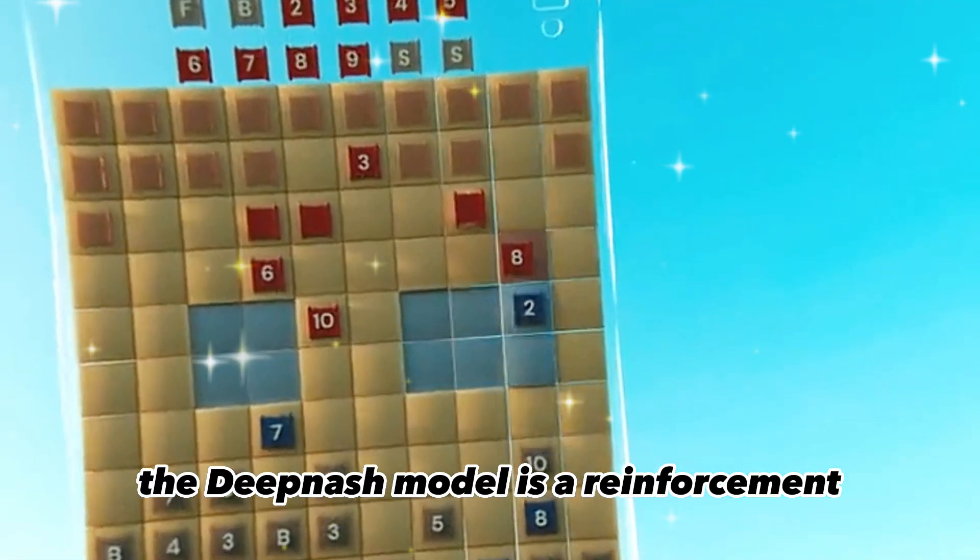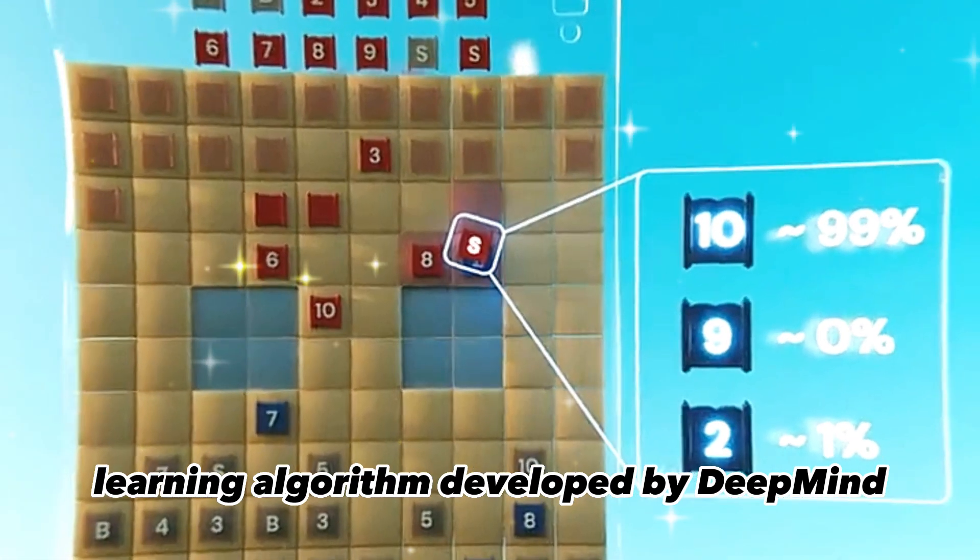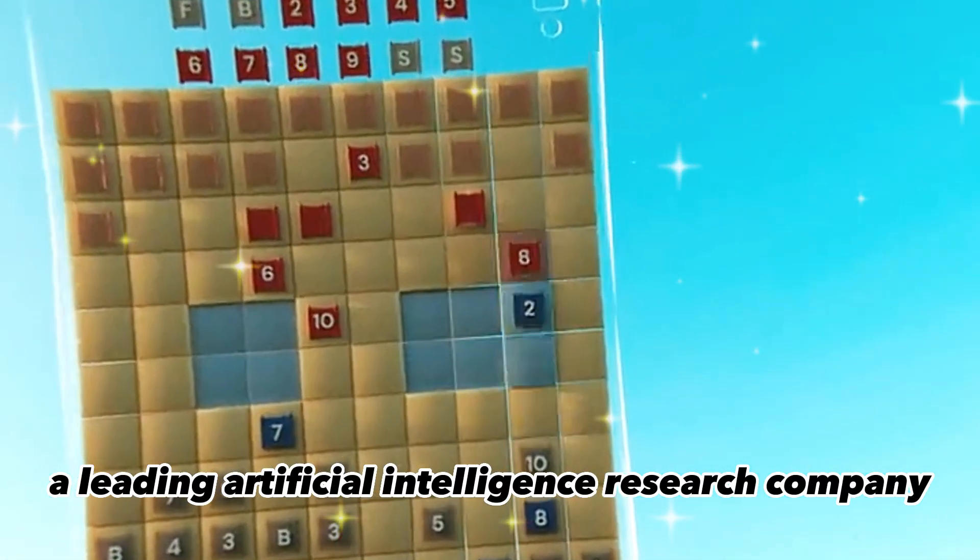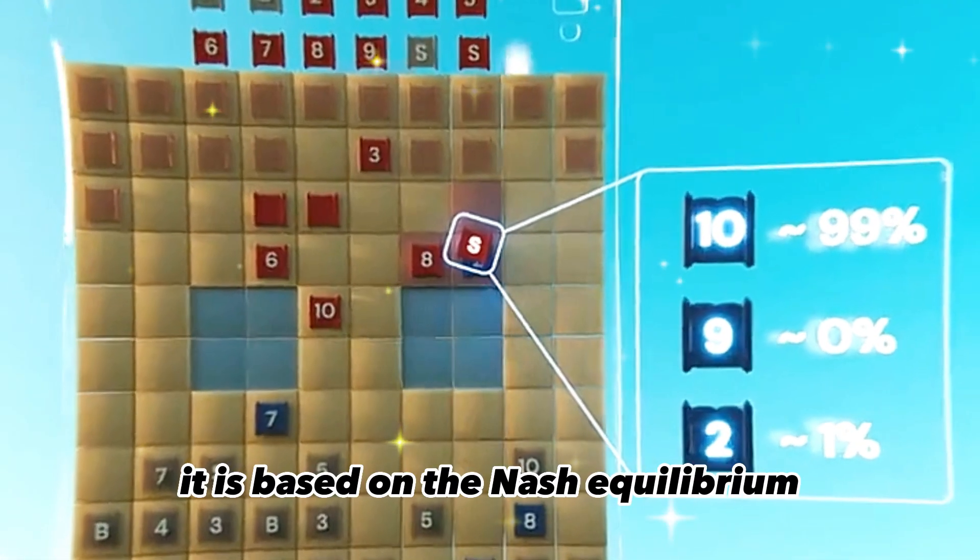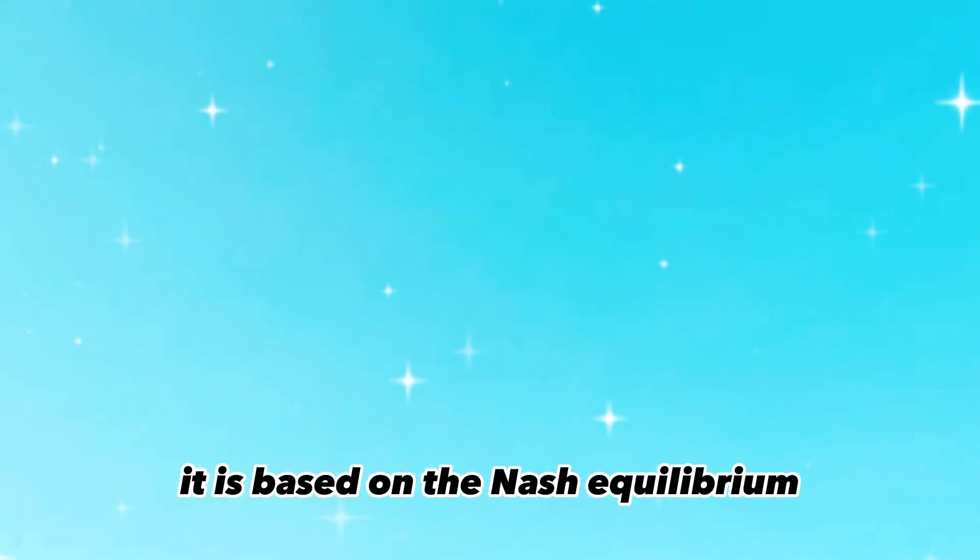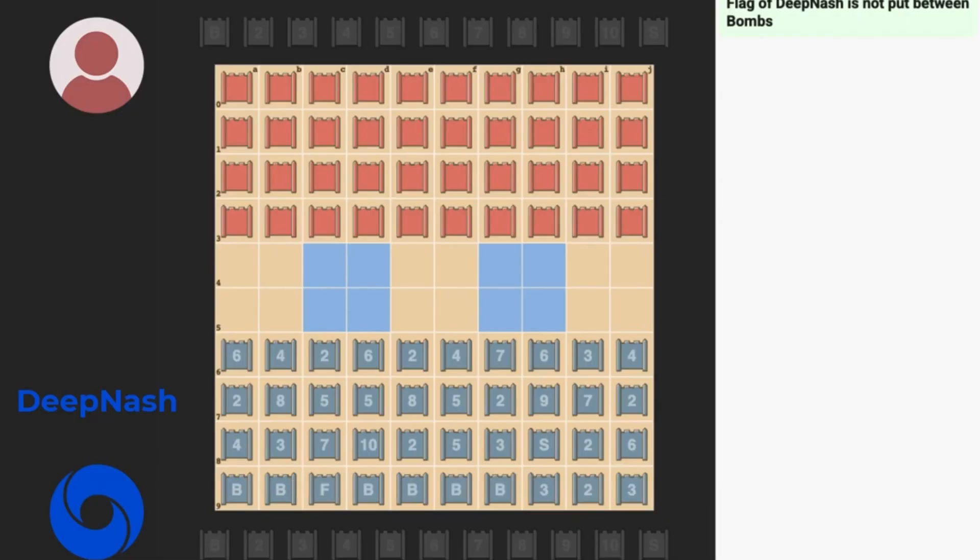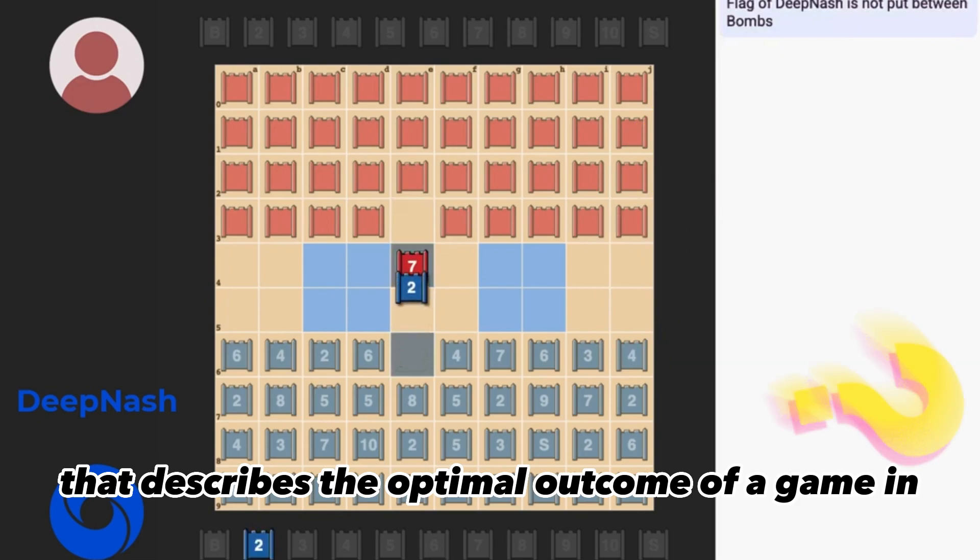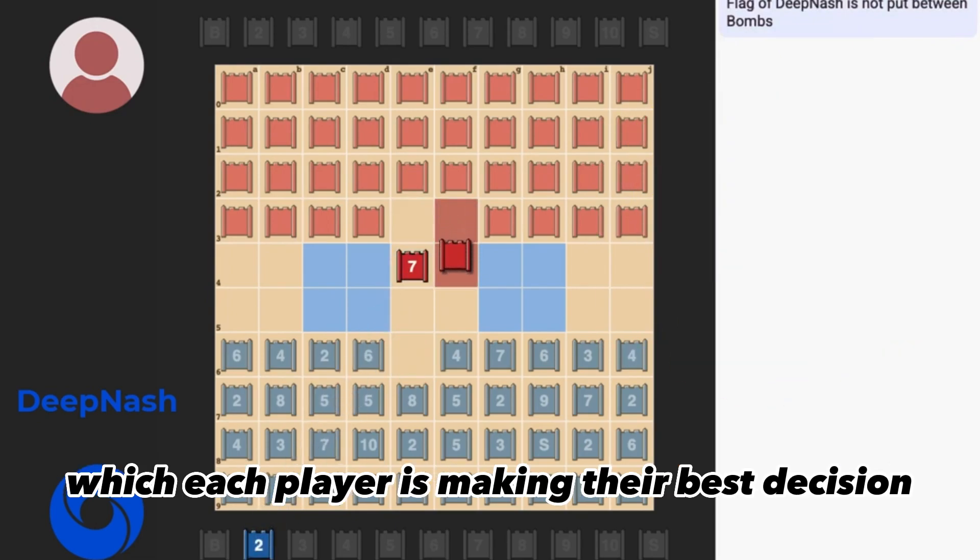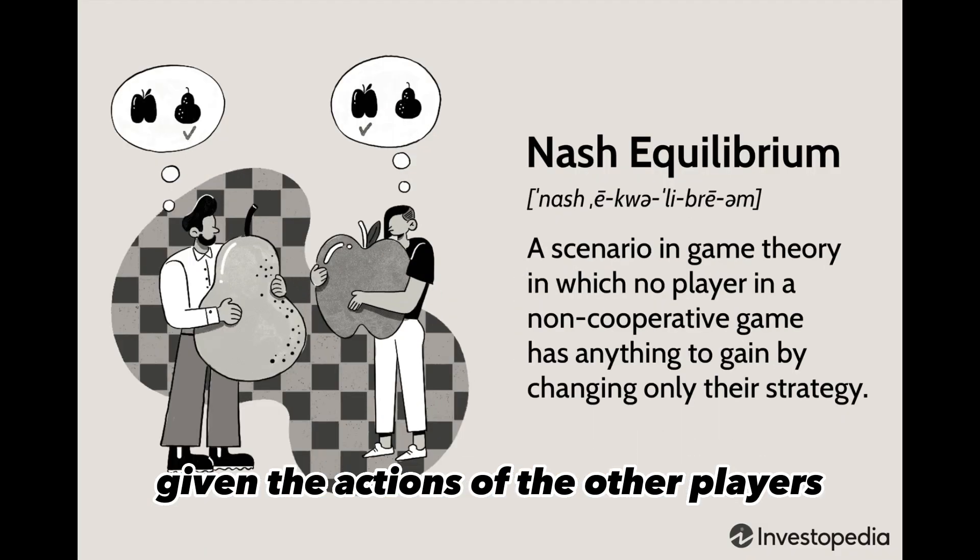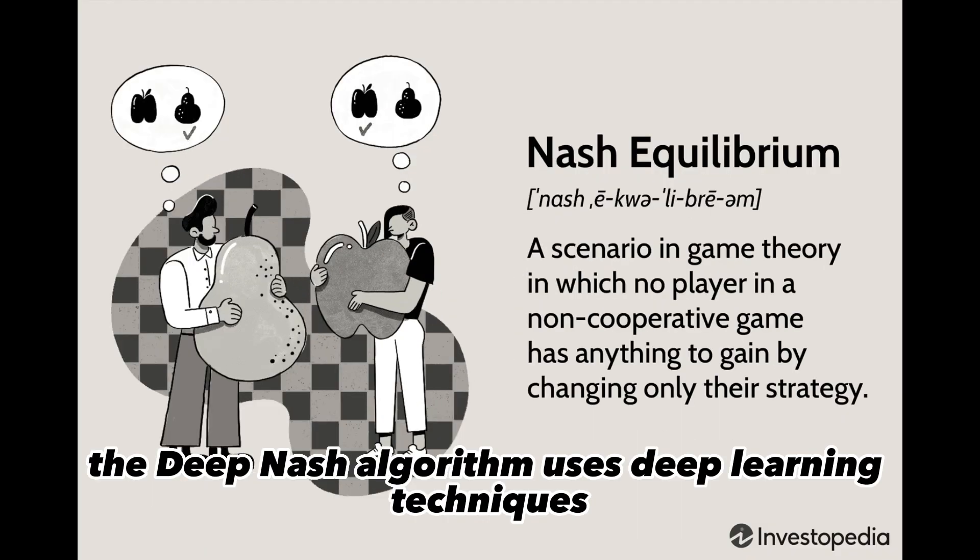The DeepNash model is a reinforcement learning algorithm developed by DeepMind, a leading artificial intelligence research company. It is based on the Nash Equilibrium, a concept in game theory that describes the optimal outcome of a game in which each player is making their best decision given the actions of the other players.